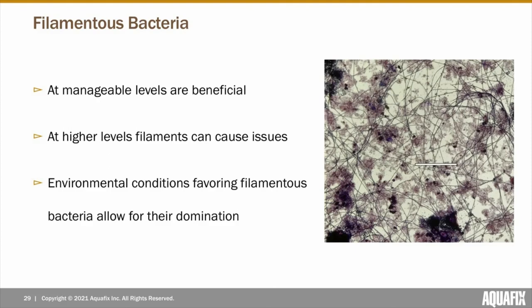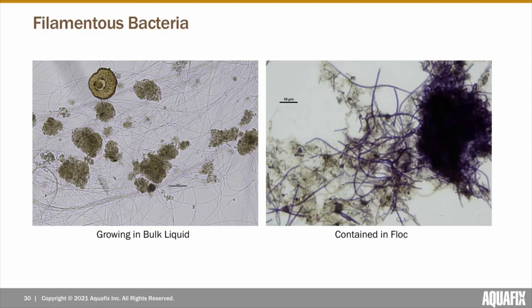Another aspect we look at is the type and abundance of filamentous bacteria present. Filamentous bacteria can be present in every wastewater plant at various levels. At manageable levels, filaments can provide structure and support for flock, so some levels are necessary and beneficial. However, when environments favor filaments, they are allowed to dominate the system and out-compete flocculated bacteria, leading to issues such as bulking and foaming. Filaments tend to have distinct characteristics, so identification is done largely through appearance — we notate whether filaments are growing in the bulk liquid or within the flock, their abundance, cell shape and size, and whether the filament is motile or not.